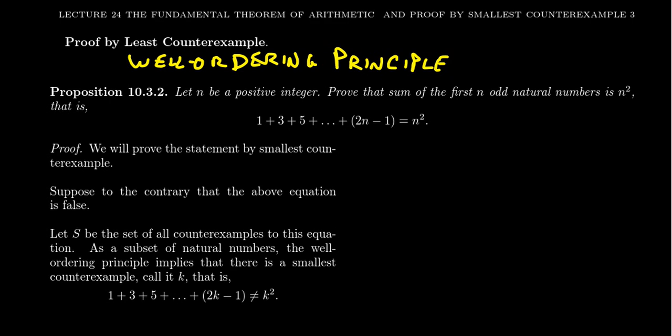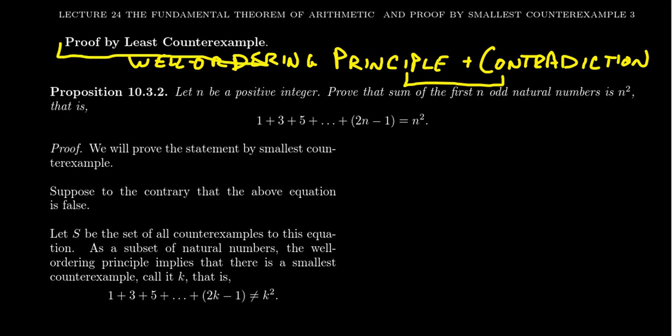We've also learned proof by contradiction — to prove a statement true, you can assume it's false and derive a contradiction. When you combine these two techniques, because we've seen proofs using the minimal natural number satisfying a condition — for example, the division algorithm and Euclidean algorithm both follow from the well-ordering principle — combining the well-ordering principle with proof by contradiction gives you the technique referred to as proof by least counterexample.